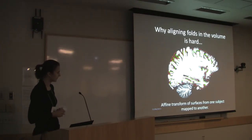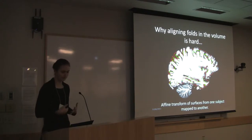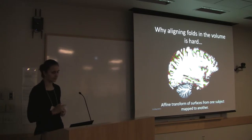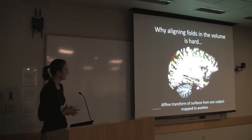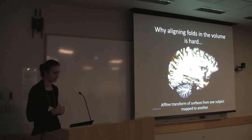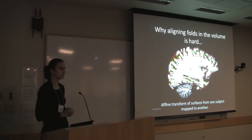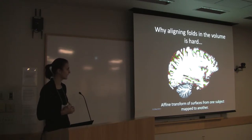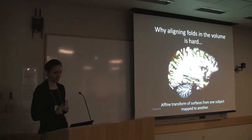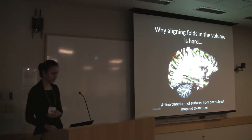You have seen this picture already several times in this course. This is again a demonstration of why it is so hard to align folding patterns when you have two volumes. The colorful pial and white matter surfaces were extracted from subject one and overlaid on the grayscale intensity image of another subject, after these subjects were globally aligned using an affine transformation. You see that overall globally the two brains are well aligned, however the folding patterns are not matching.